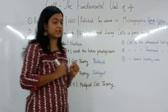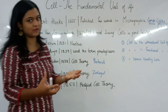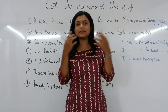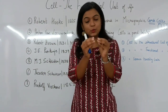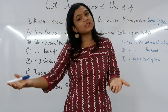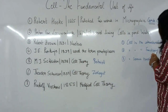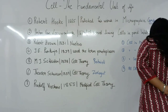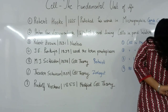But this cell theory was incomplete. That is why in the year 1855, another scientist called Rudolf Virchow proposed a modification: he said that all cells come from a pre-existing cell. It is not like a cell pops up out of nowhere — a cell divides to give rise to new cells. So, all cells arise from pre-existing cells.